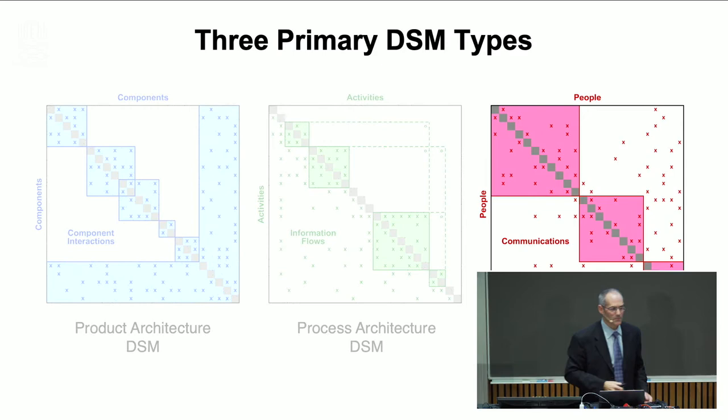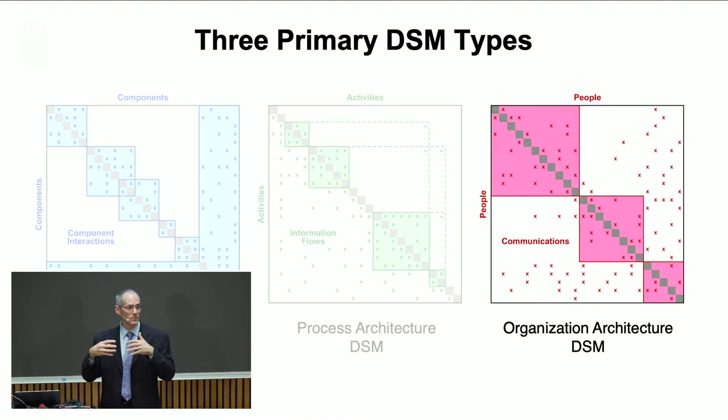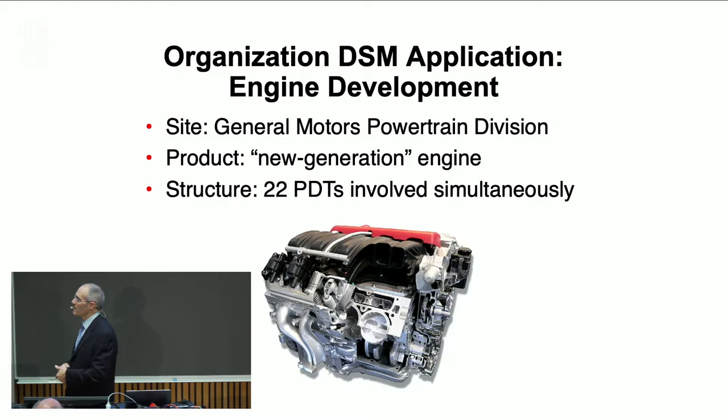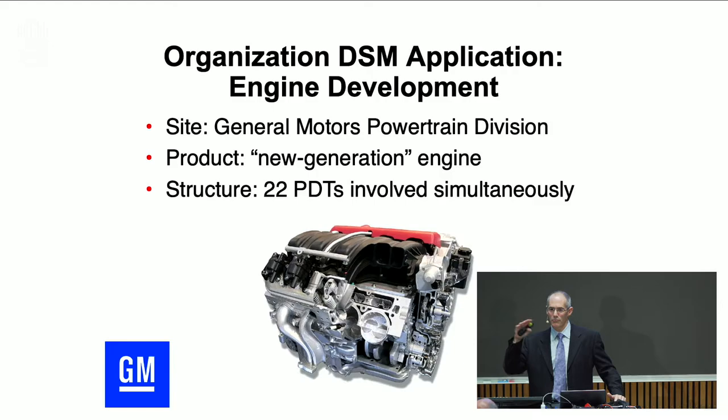I want to show you an example of the organizational Design Structure Matrix. The same basic idea — we lay out in a square matrix a network of connections — but now we've decomposed the organization into things like people, teams, and work groups. The connections across them represent the architecture, the network we look at. I'll show you an example from the auto industry, from General Motors, which has a traditional organizational structure — and I'll be able to suggest for them a more appropriate organizational structure.